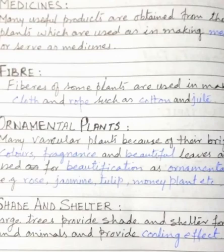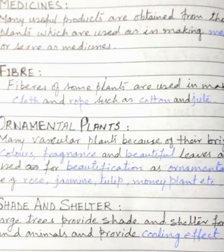Second last heading: ornamental plants. Many vascular plants, because of their bright colors, fragrance, and beautiful leaves, are used for beautification as ornamental plants — for example, rose, jasmine, tulip, money plant, etc.